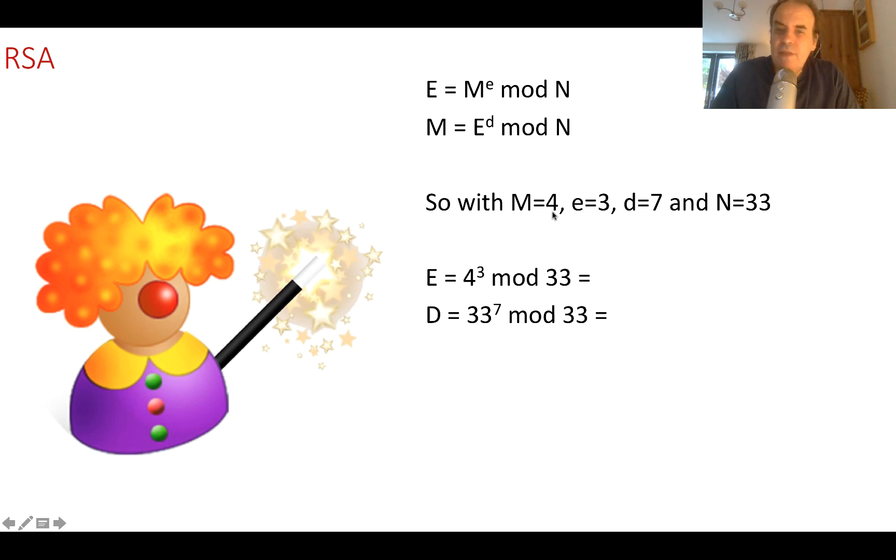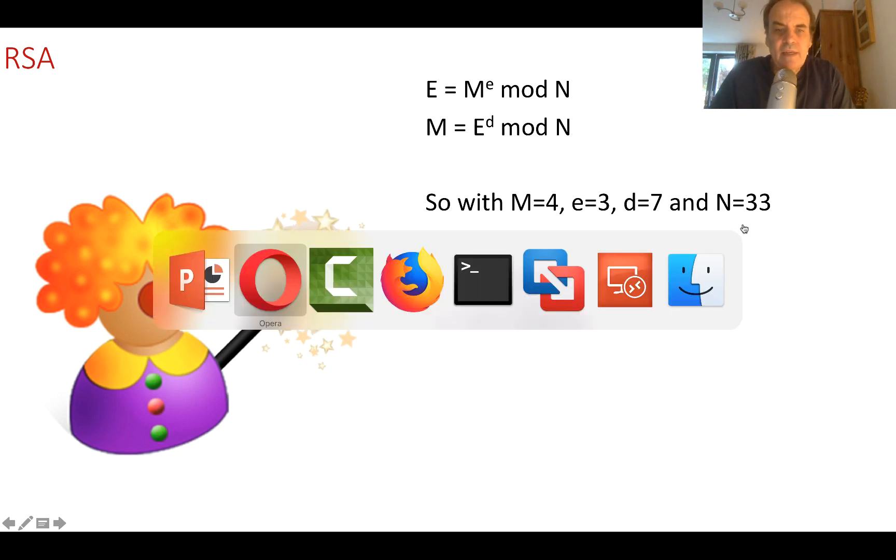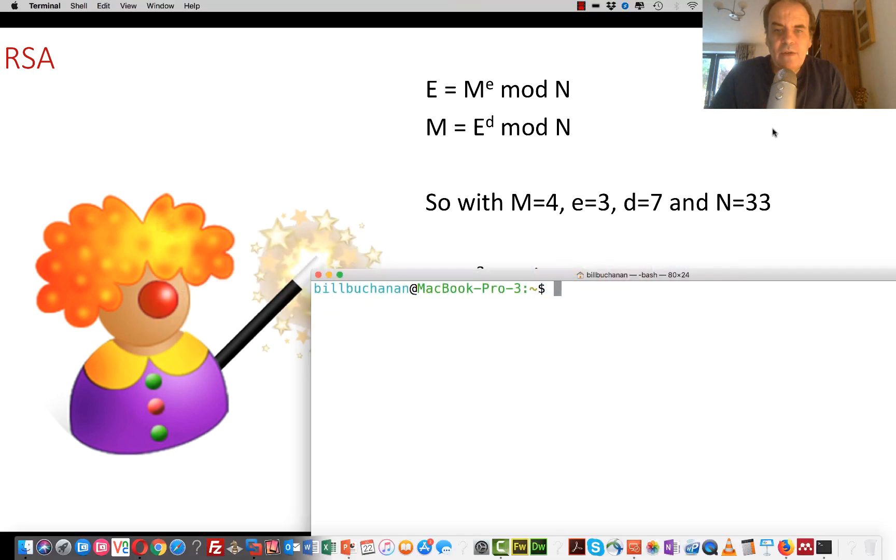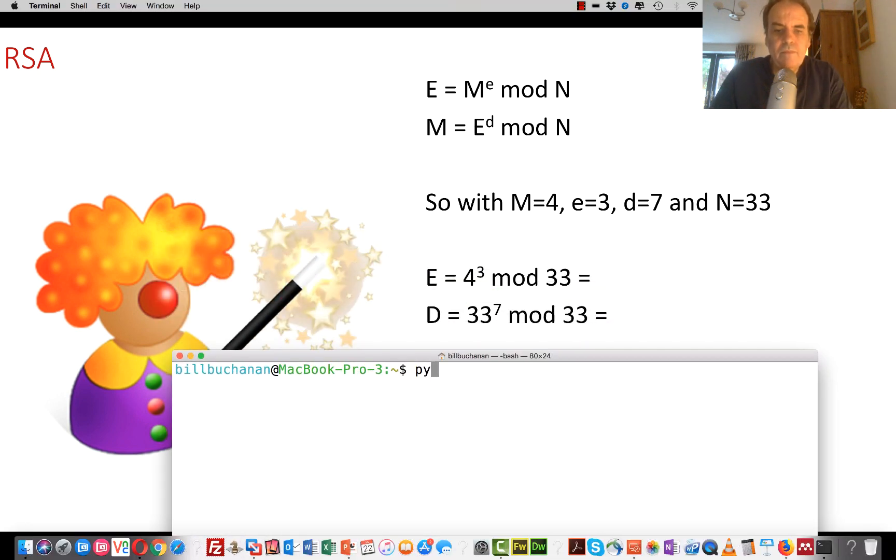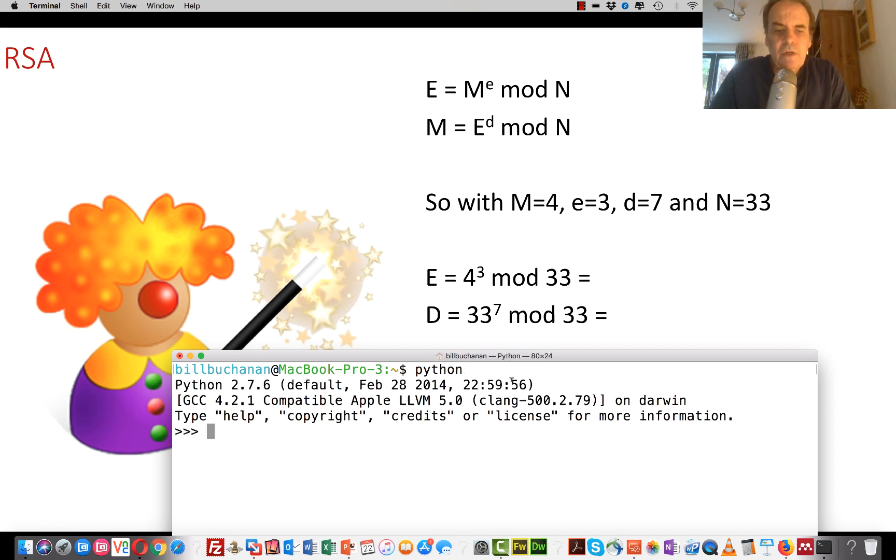If we try with a message of 4, an E value of 3, as we calculated, D of 7, and N of 33, let's do a quick calculation. So our encryption is equal to 4 to the power of 3 mod 33, so that's 31. We'll now take 31 to the power of 7 mod 33, and hopefully we'll get our value back, which is 4, which is correct.